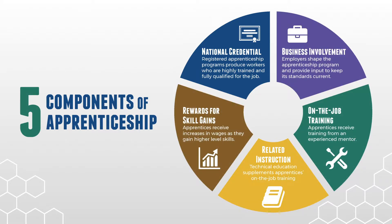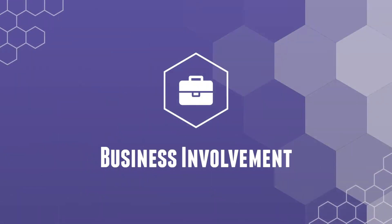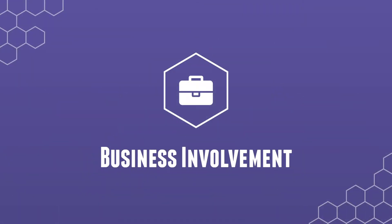Now that we know the 5 components of apprenticeship, let's cover them in more detail. The first component of apprenticeship is business involvement. Employers serve as the foundation of every apprenticeship program. Employers not only determine the skills that workers should acquire during their apprenticeship, they continuously provide input so that the apprenticeship program remains current with changing industry trends, tools, and technology. Without dedicated employers to manage the program, apprenticeship would simply not exist.